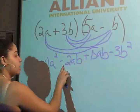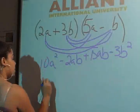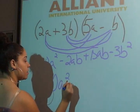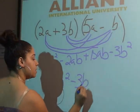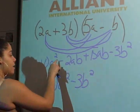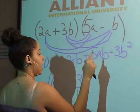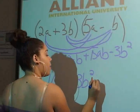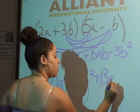Now you're not done yet. Now you can combine like terms. So here we have 10a squared minus 3b squared. And negative 2ab plus 15ab gives you a positive 13ab.